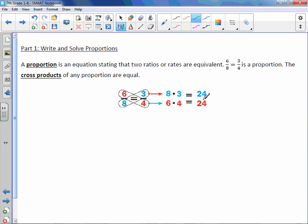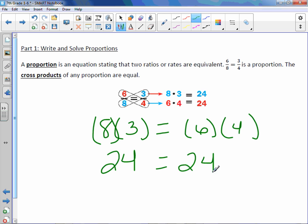So what you could say is that 8 times 3 is equal to 6 times 4. So cross products are equal. 24 is equal to 24.